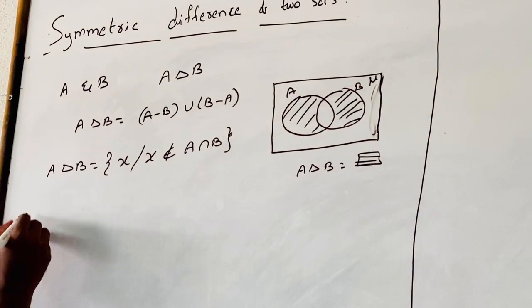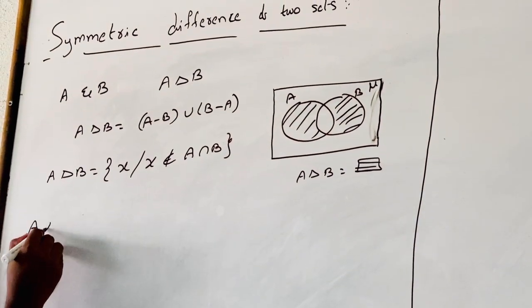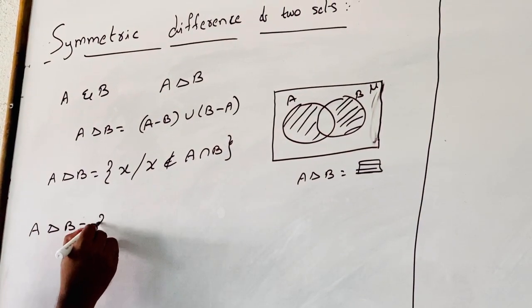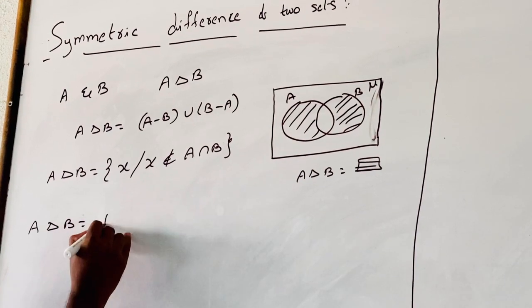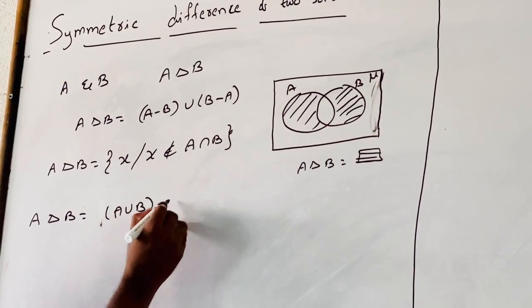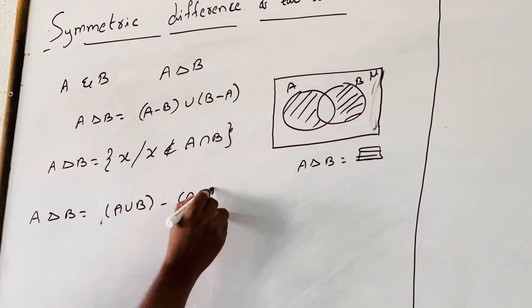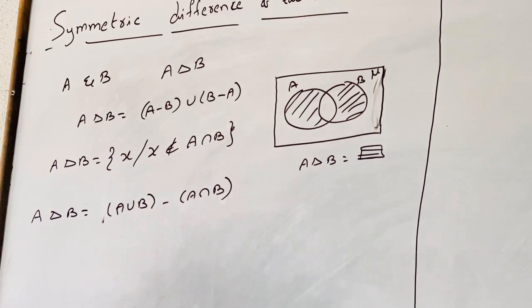A delta B has another formula: A delta B is equal to A union B minus A intersection B.